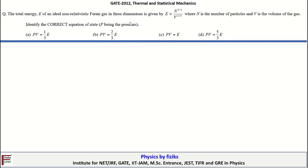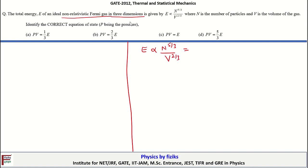Next problem is also related to the free electron gas in three dimensions. We are given that the total energy of an ideal non-relativistic Fermi gas in three dimensions is given as E proportional to N^(5/3) / V^(2/3), or with the proportionality constant: E = C·N^(5/3) / V^(2/3). We have to obtain the expression for the pressure exerted by this gas.